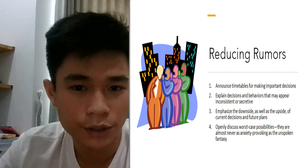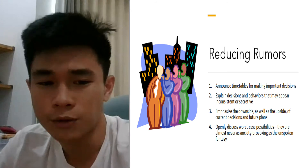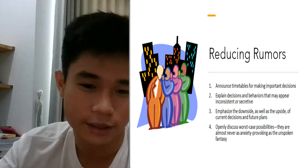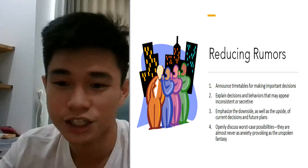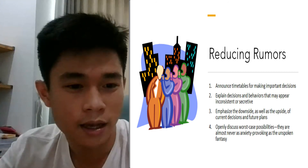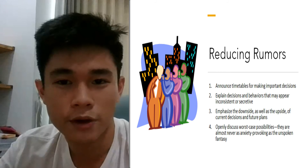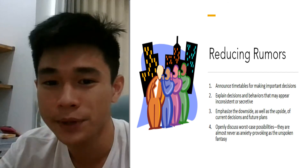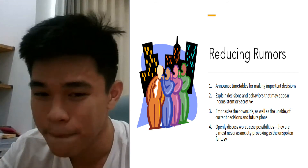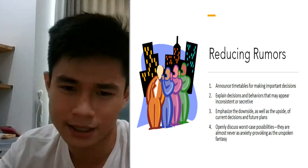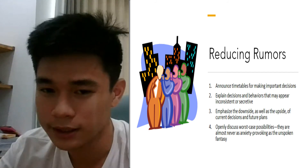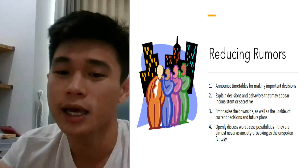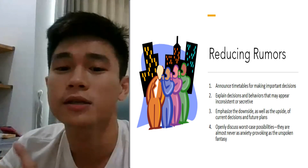The last topic is reducing rumors. In any organization, rumors will be present. Managers cannot completely eliminate rumors, of course. But there are some steps to reduce them. First, announce timelines for making important decisions. Second, explain decisions and behaviors that may appear inconsistent or secretive. Third, emphasize the downsides as well as the upsides of current decisions and future plans. Finally, openly discourage worst-case possibilities, as these are the most anxiety-provoking.